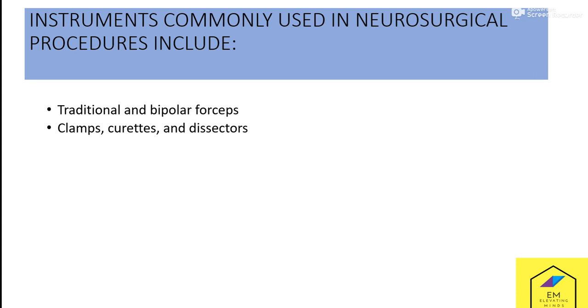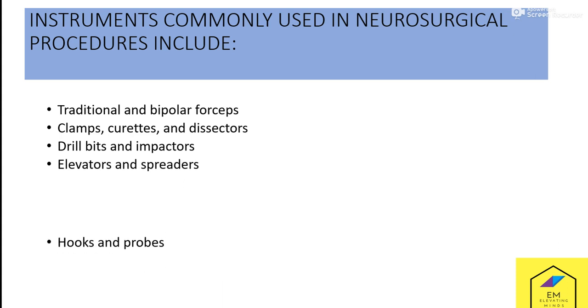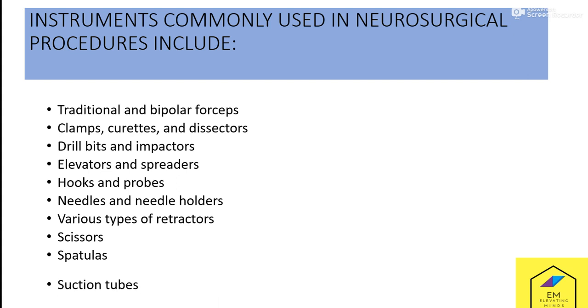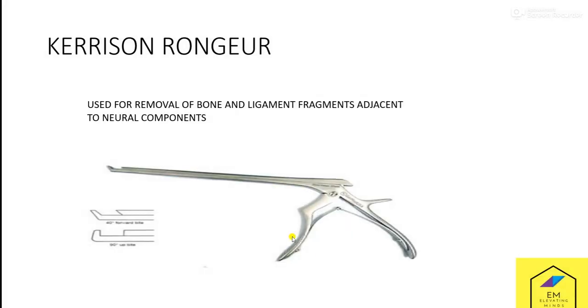First, let's see the main categories of instruments used in neurosurgical procedures. These include traditional and bipolar forceps, curettes, clamps, and dissectors, drill bits and impactors, elevators and spreaders, hooks and probes, needle holders for suturing, various retractors to expose underlying tissues, scissors to cut structures like dura mater and sutures, spatulas, and suction tubes.